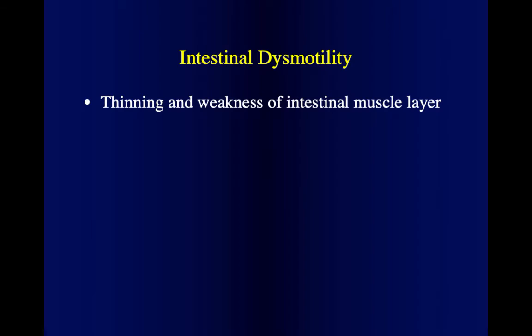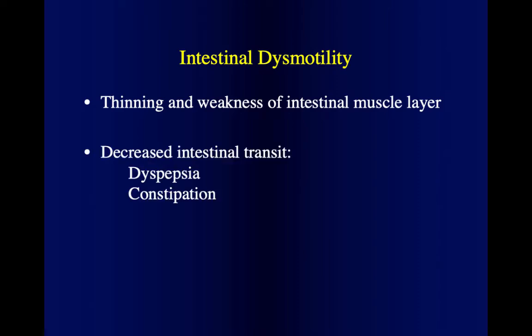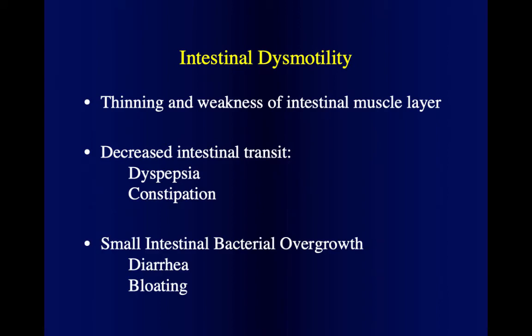Although less common, scleroderma can also affect the small bowel and colon through a similar mechanism — thinning and weakness of the muscle layer. This causes decreased intestinal transit, meaning food doesn't move properly. Symptoms include dyspepsia and constipation. Because motility doesn't work properly, bacteria from the lower digestive tract can migrate upward — so-called small intestinal bacterial overgrowth (SIBO). These bacteria ferment what we eat, causing diarrhea and bloating, which is treated with antibiotics.